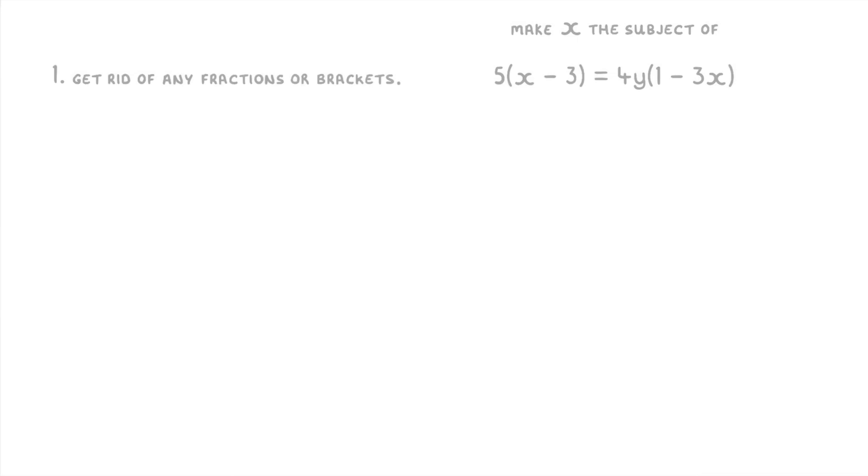On the left that gives us 5 times x which is 5x and 5 times minus 3 which is minus 15. Then on the right we do 4y times 1 to get 4y and 4y times minus 3x to get minus 12xy. So if we look at our equation we now have four different terms and they're all being added and subtracted from each other with no brackets or fractions.